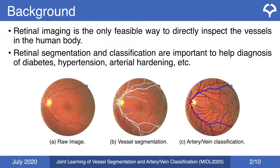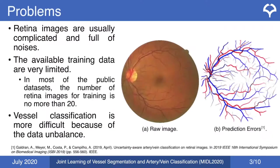This is an example of a raw retina image, segmented vessels, and artery/vein classification. Retina images are very complicated and noisy, and segmentation and classification is not an easy task.